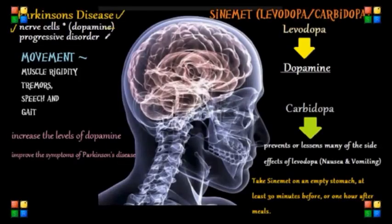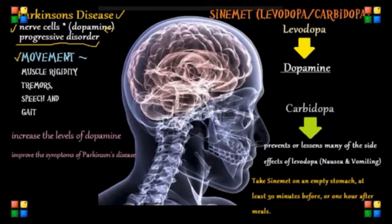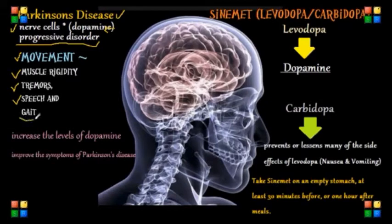Parkinson's disease is a progressive disorder of the nervous system that mostly affects movement. Main symptoms are related to movement, such as muscle rigidity, tremors, changes in speech — which is called aphasia — and it also affects the patient's gait or walking.